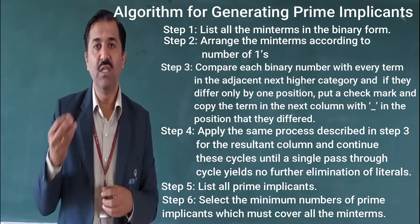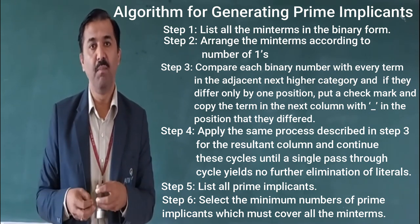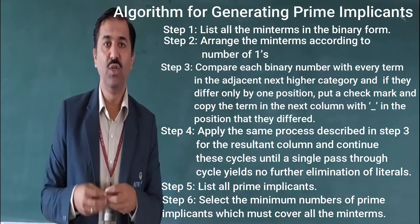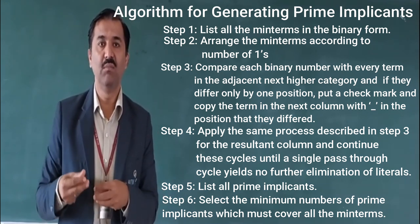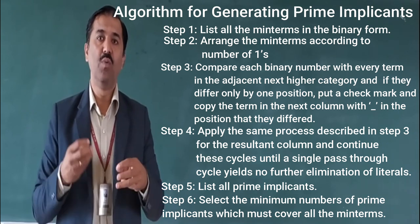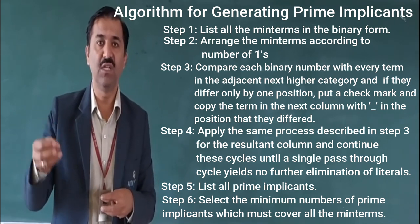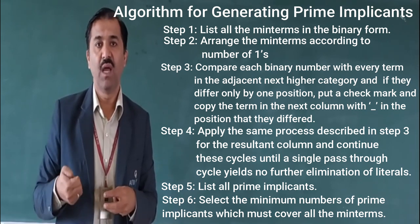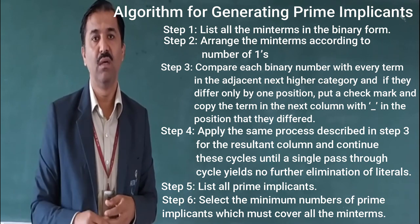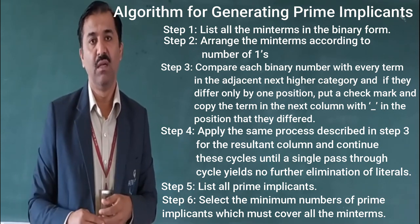Once you have understood this algorithm properly, you can apply it in simplifying the expression to find the minimum terms that will be part of the final Boolean expression. In my next video, you are going to see how I apply these algorithm steps to simplify expressions using the Quine-McCluskey method with different examples. If you have any doubts or queries regarding any of the steps we just discussed, you can text me and I will be there to solve your queries. Thank you and keep watching my next video on the Quine-McCluskey method of minimizing Boolean expressions with different examples.